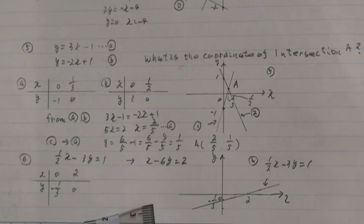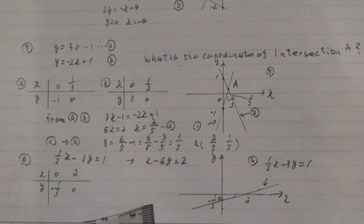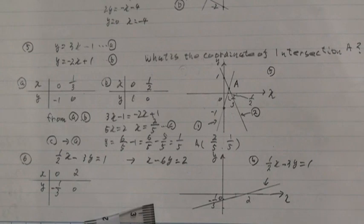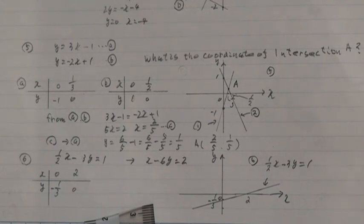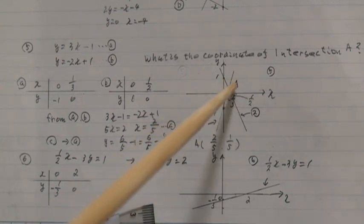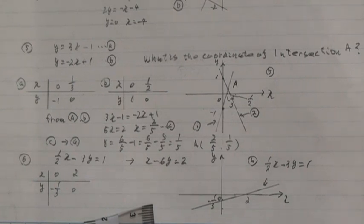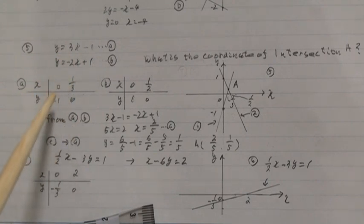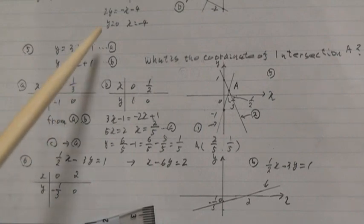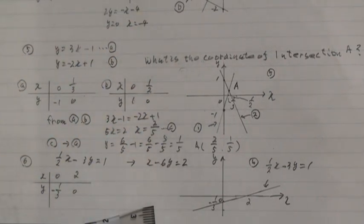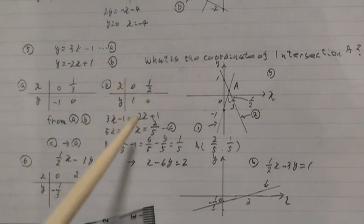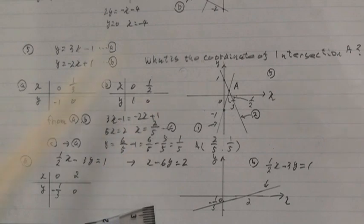And circle 5: y equal 3x minus 1, point A; and y equal minus 2x plus 1, point B. What are the coordinates of intersection? The intersection is point A. Make a table: circle A: x equal 0, y equal minus 1; x equal 1 over 3, y equal 0. Circle B: x equal 0, y equal 1; x equal 1 over 2, y equal 0.